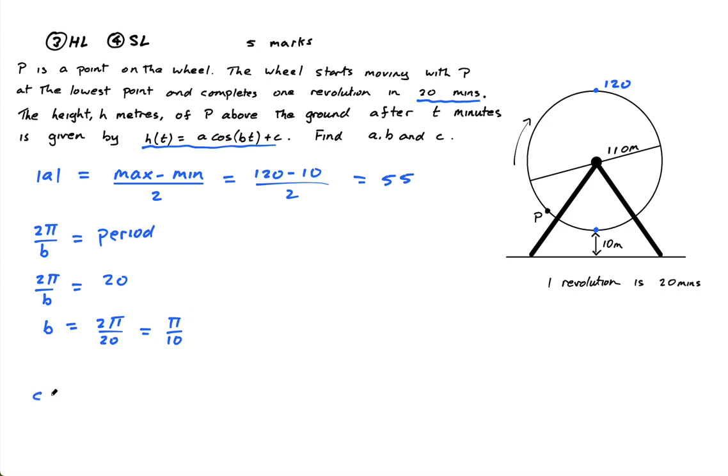And then C, C is this, it's the equation of this middle line here. It's bang in the middle. So the way we get that is we say it's max plus min over 2. Now you might guys just know what it is. Look, it's 55 plus the 10 is 65. So you can actually figure it out just by looking at it. But I do want you to get used to these rules because depending on the question, these rules always work. So the max is 120, the min is 10.